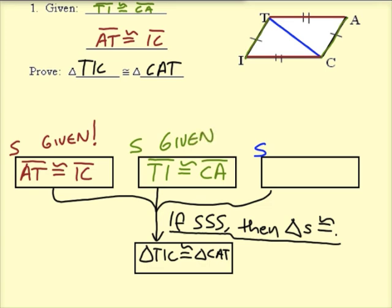And then lastly, we need to talk about the shared side. So that shared side is kind of strange. In triangle T, I, C, I see that the segment is, if we follow the order of the letters, then the segment would be called T, C.